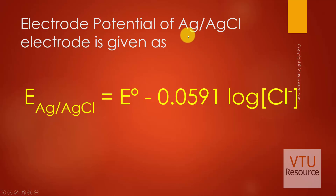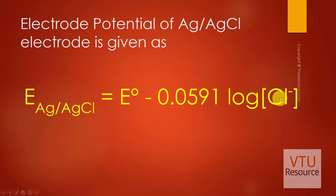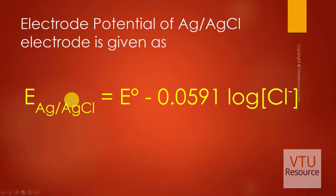The electrode potential of the Ag/AgCl electrode is given as: E(Ag/AgCl) = E° − 0.0591 × log[Cl⁻]. From this equation it is clearly evident that the electrode potential depends upon the concentration of Cl⁻ ions. As the concentration of Cl⁻ ions varies, the electrode potential of E(Ag/AgCl) will also vary.